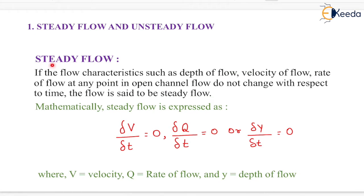What do you mean by steady flow? If the flow characteristics such as depth of flow, velocity of flow, and rate of flow at any point in open channel flow do not change with respect to time, the flow is said to be steady flow. It means that if the velocity, discharge, or depth is not changing with time, then it is known as steady flow.